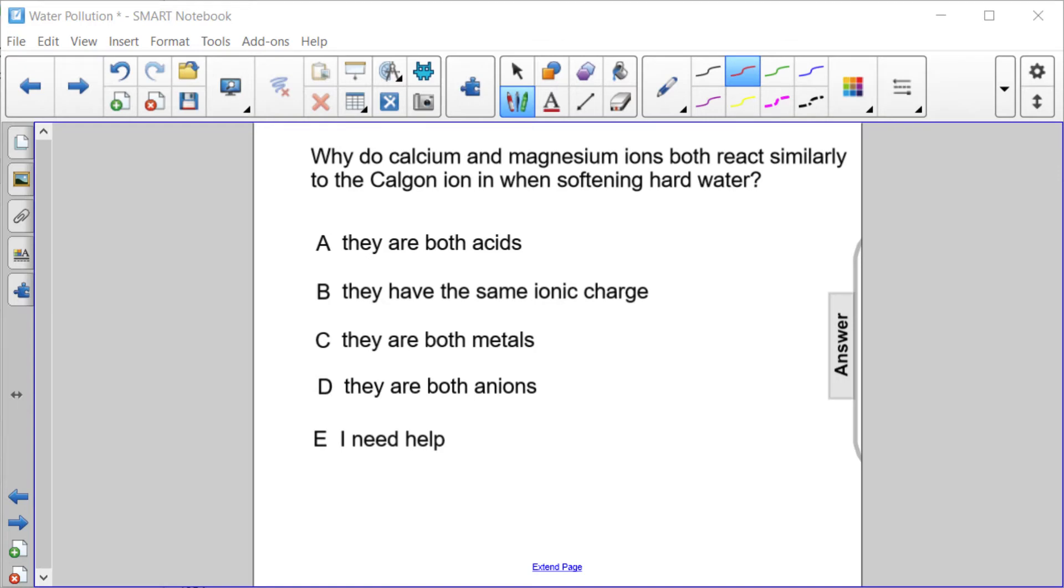So again, just like with the previous question, if you go back and take a look at how those reactions happen with both magnesium and calcium, you can see that for each single calcium ion and magnesium ion that reacts with the Calgon ion, we're displacing two sodium ions and that reaction is taking place in a similar way. And the reason that that happens is because they both have the same ionic charge.